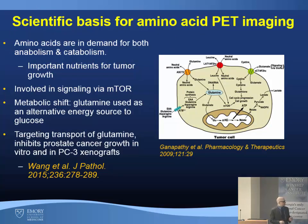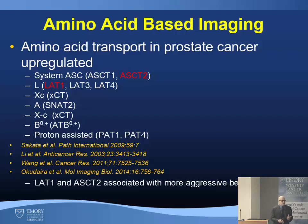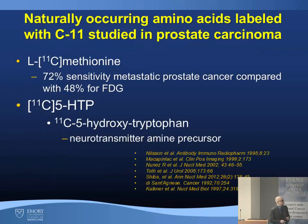There's a real scientific basis for amino acid PET imaging. Amino acids are in demand for anabolism and catabolism and are important nutrients for tumor growth, also involved in signaling via the mTOR pathway. In many tumors, there's a metabolic shift in which glutamine is used as an alternative energy source to glucose. Targeting glutamine transport inhibits prostate cancer growth in vitro and in PC3 xenografts. Amino acid transport is upregulated in many cancers, including prostate cancer. ASCT2 and LAT1 are the two most important transport systems, associated with more aggressive behavior, and called the 'partners in crime' because they often work in tandem.